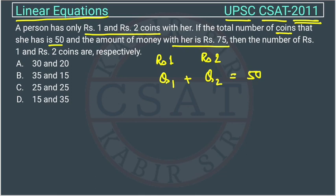And in terms of money, how much money is she having? The money will be equal to 1 into Q1 plus 2 into Q2 is equal to 75.